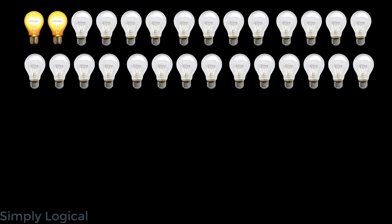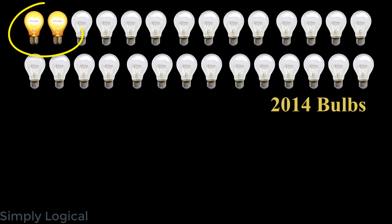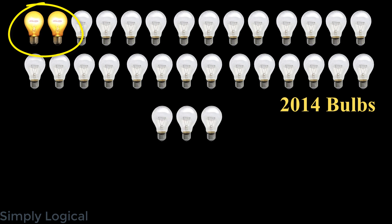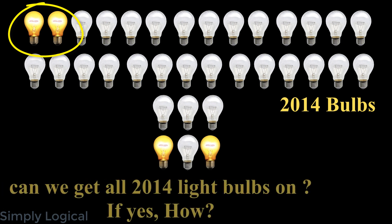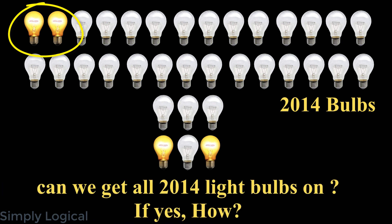Welcome back to SimpliLogical, this is Vingtish. On a circle, there are 2014 light bulbs — two are on and 2012 are off. You can choose any bulb and change the neighbor's state from on to off or from off to on. Can we get all 2014 light bulbs on?